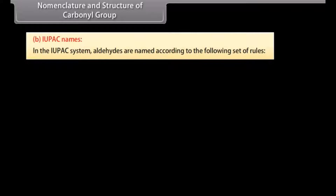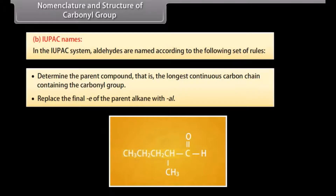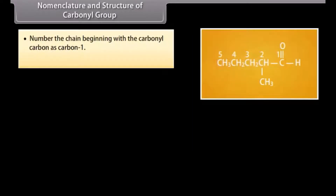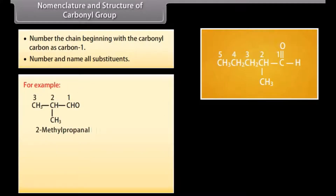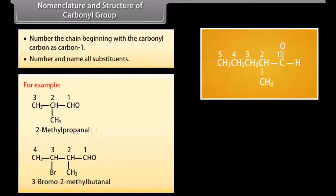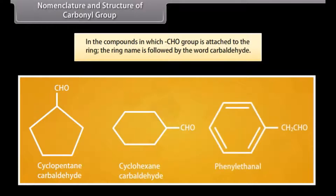IUPAC names. In the IUPAC system, aldehydes are named according to the following rules: determine the parent compound, that is, the longest continuous carbon chain containing the carbonyl group; replace the final '-e' of the parent alkane with '-al'; number the chain beginning with the carbonyl carbon as carbon 1; number and name all substituents. For example: 2-methylpropanal, 3-bromo-2-methylbutanal. In compounds where the aldehyde group is attached to a ring, the ring name is followed by the word 'carbaldehyde'.